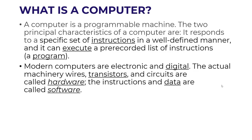Let's start with what is a computer. A computer is a programmable machine. The two principal characteristics of a computer are: it responds to a specific set of instructions in a well-defined manner, and it can execute a pre-recorded list of instructions, or a program. The computer works on the basic principle of input, process, and output.